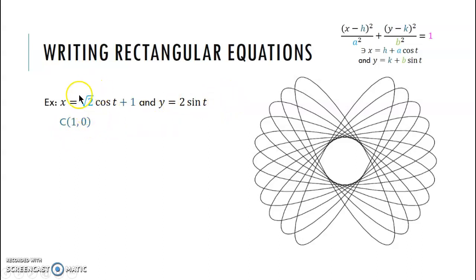Now, a comes from my x equation, so my a is equal to the square root of two. Well, I'm going to need a squared for my rectangular, so I square both sides, and I get that a squared is equal to two. Over here, I get my b from my y equation, so I get b is equal to two. Square both sides, I'll get b squared is equal to four.